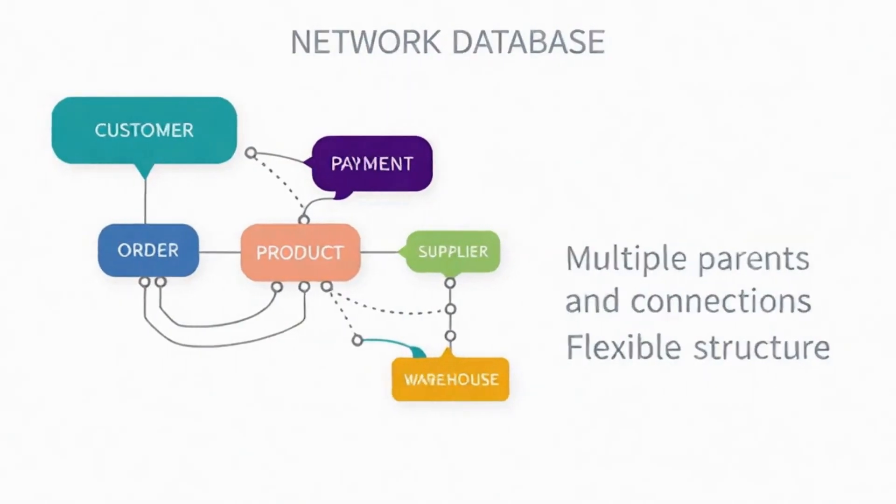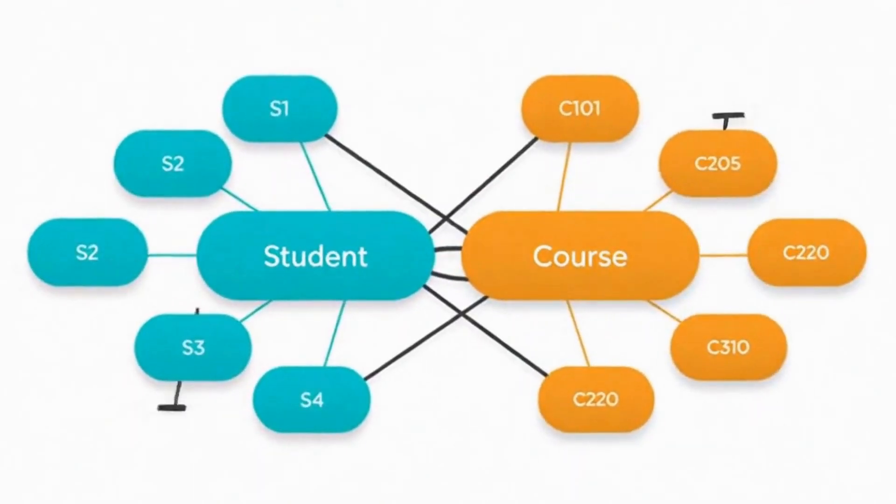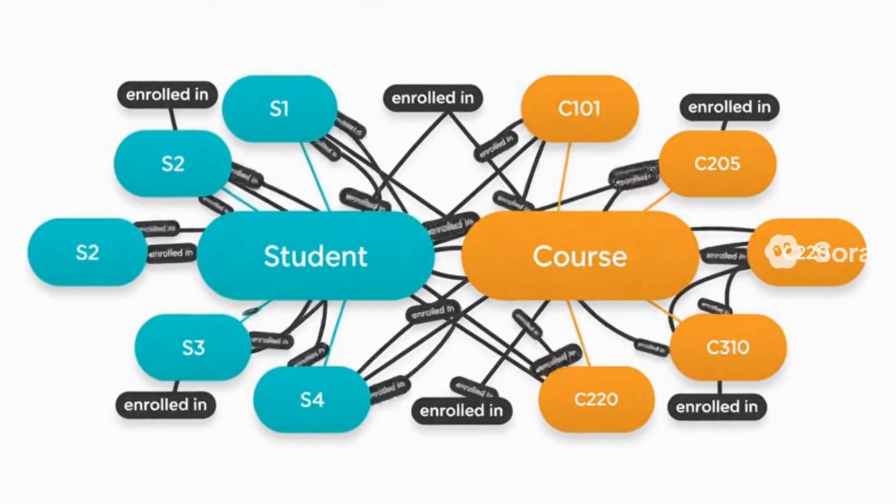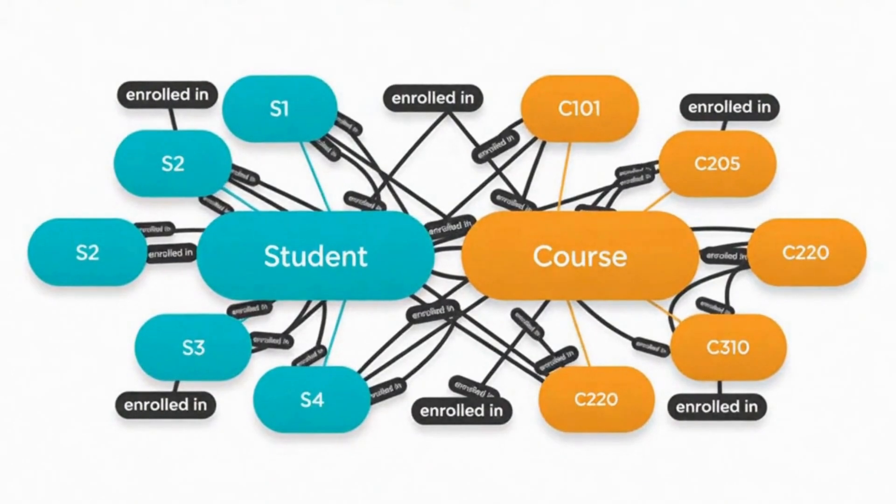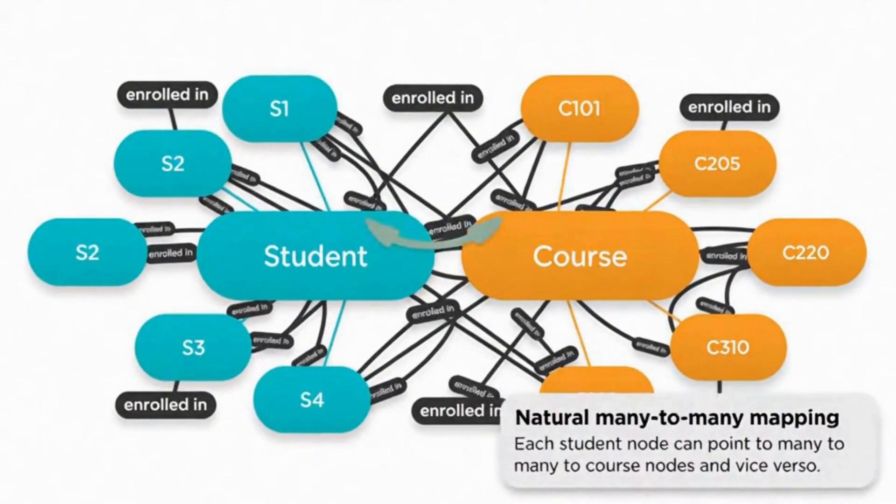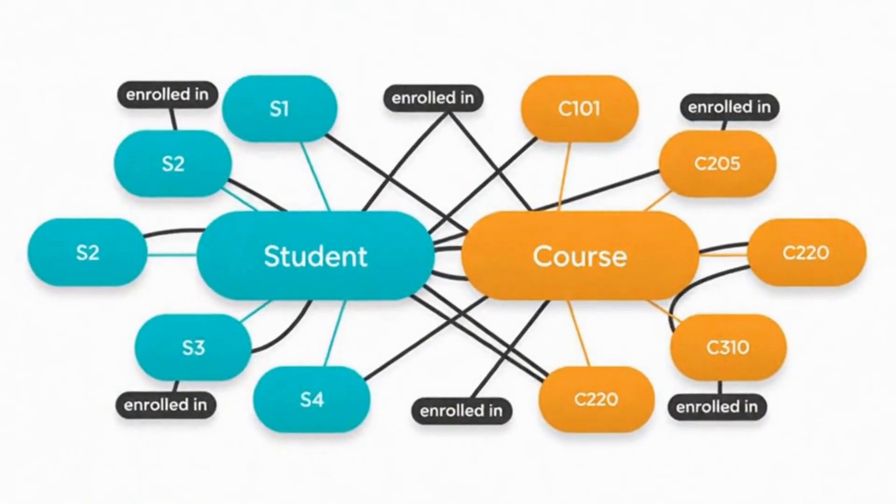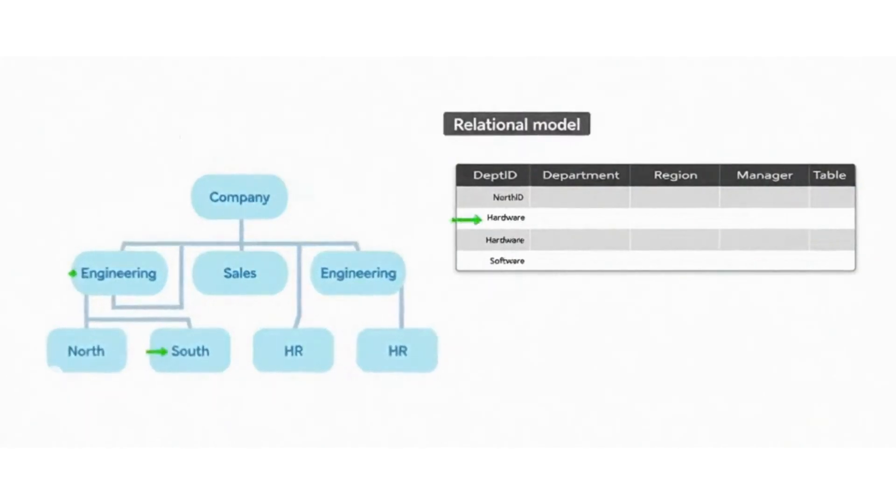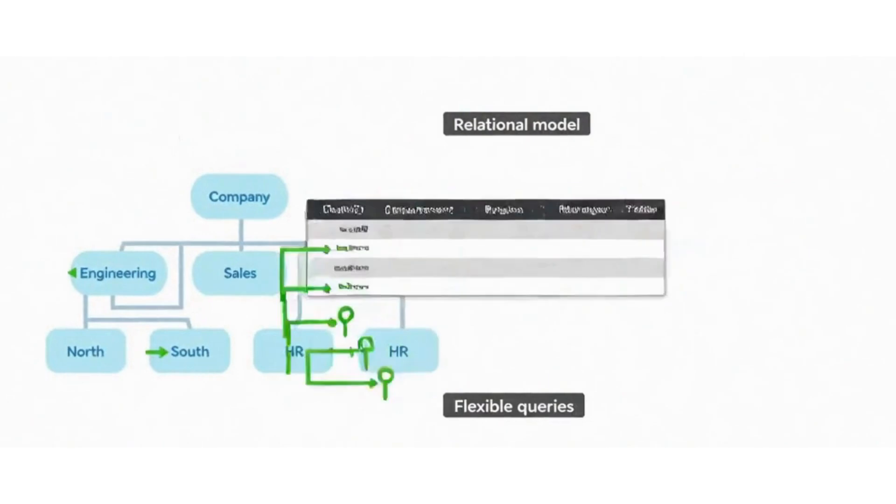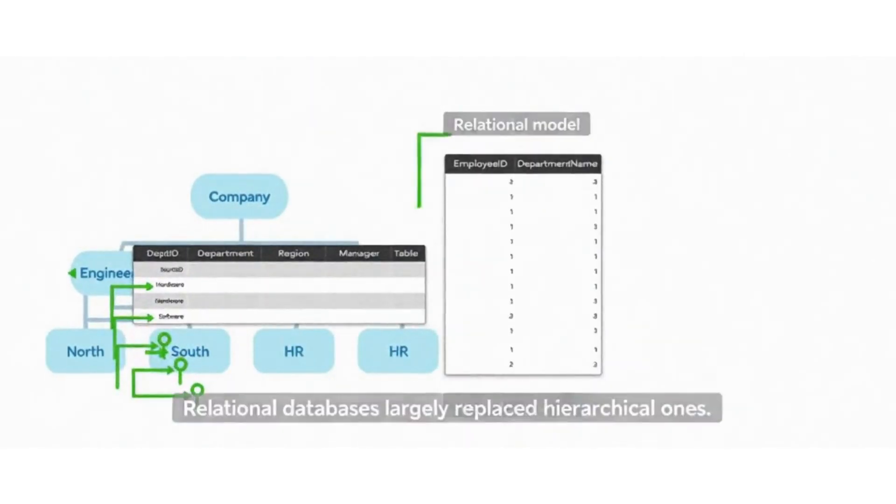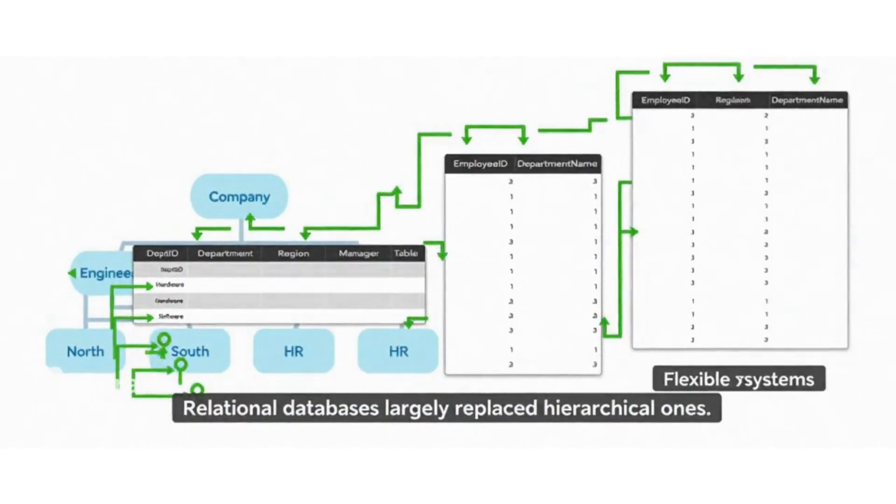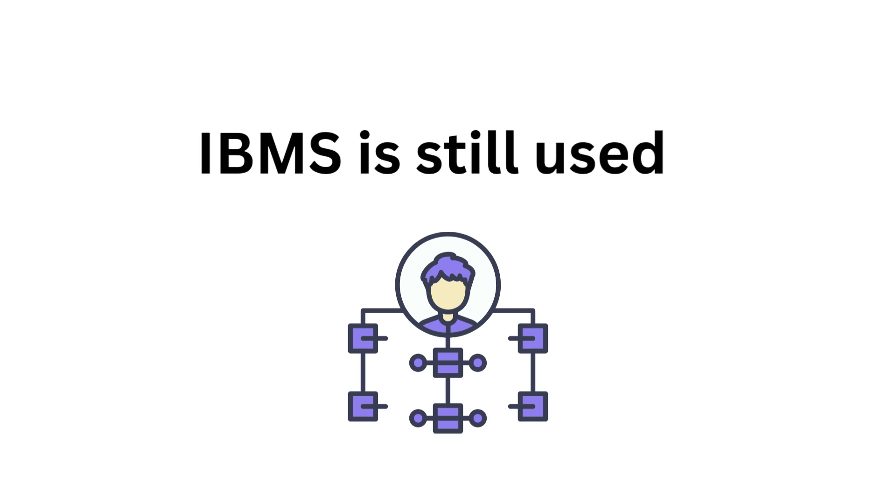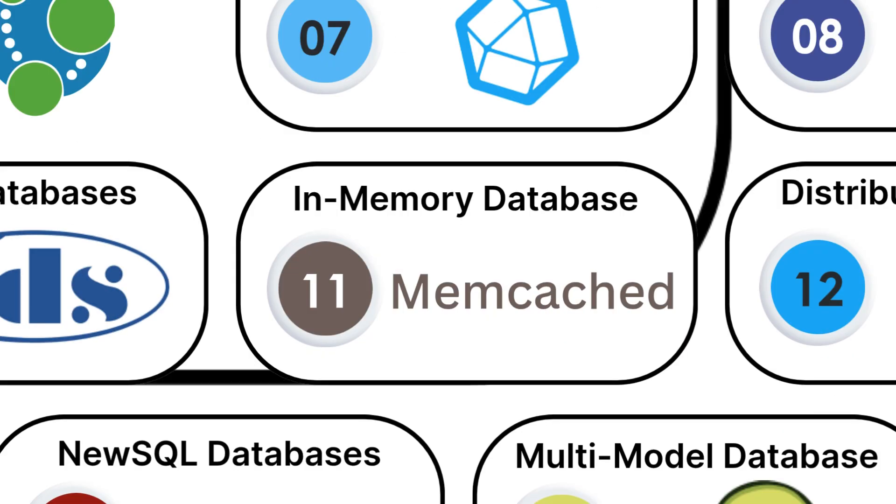Imagine a university database where a student can be enrolled in multiple courses and each course has multiple students. Network databases can handle these many-to-many relationships naturally. While largely replaced by relational databases, they were important in the early days of database development and are still used in some specialized applications. IDMS is an example that's still used in some legacy systems.